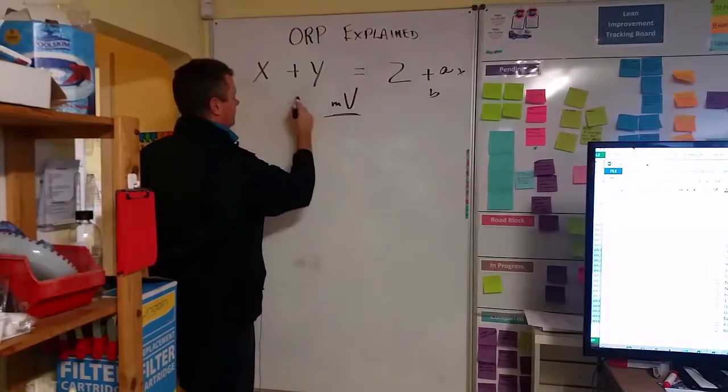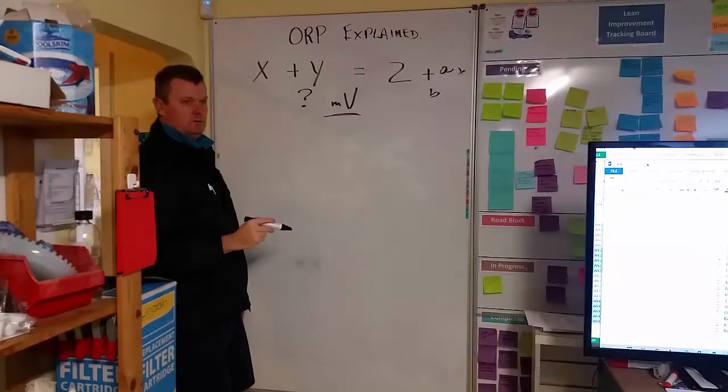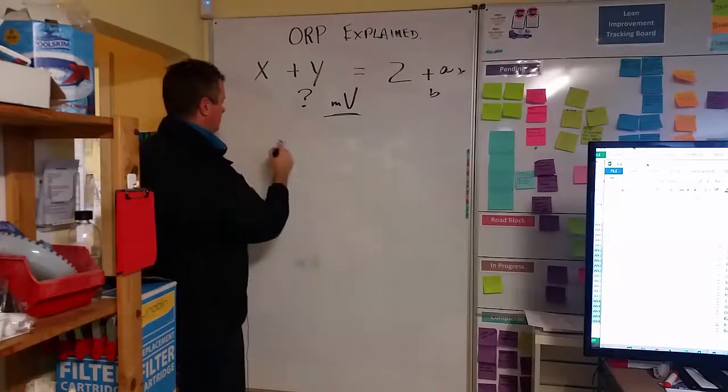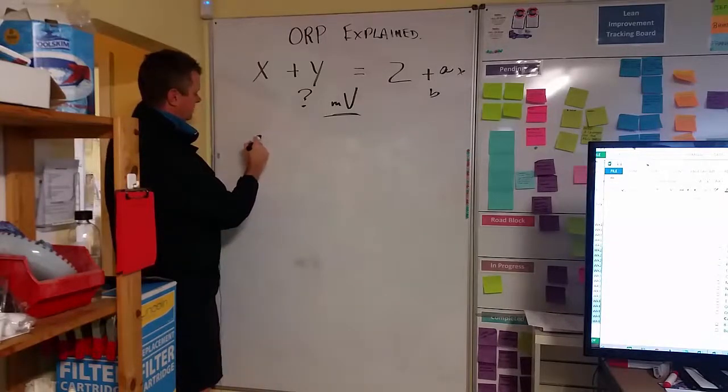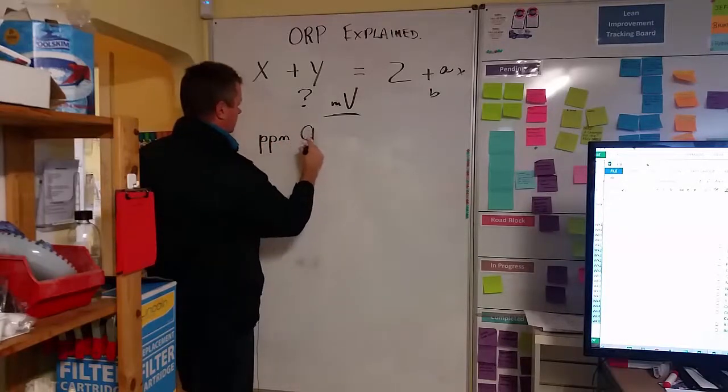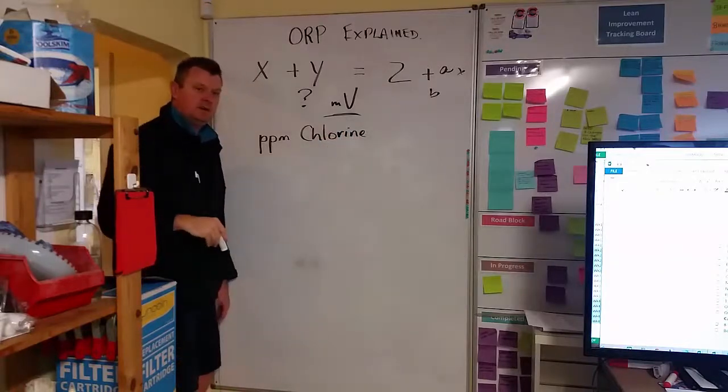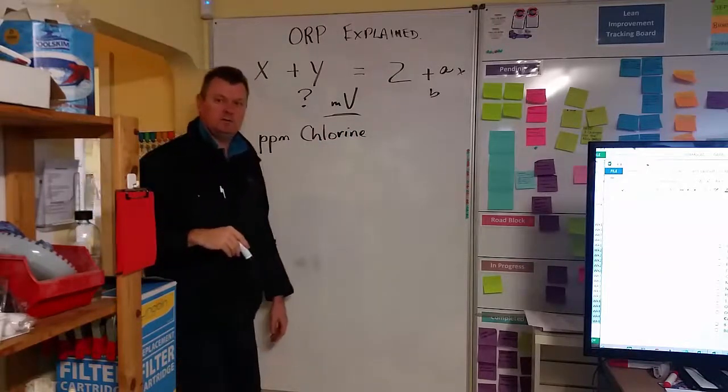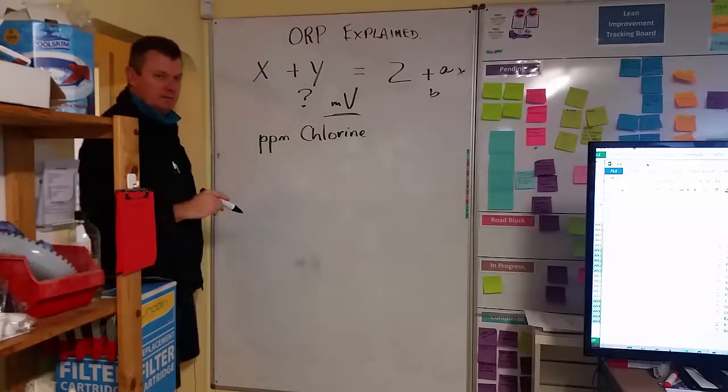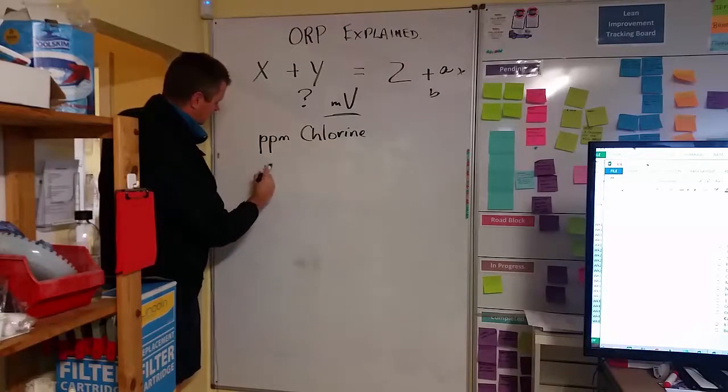That millivolt reading is affected by a few different parameters, so it's a very flexible thing. So, of course, it follows that PPM chlorine is a big factor. If you have no chlorine in the water, you don't have a lot of killing power in the water. So, as we've said before about pH, pH is another big factor.